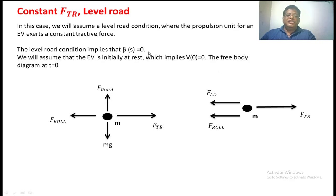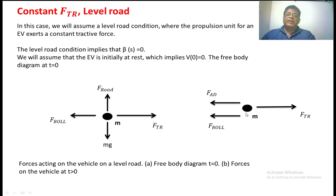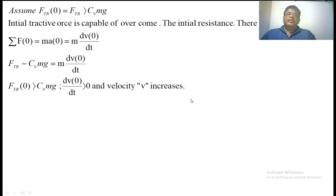The level road implies that the gradient is 0. Initially, we assume the EV is at rest, which means the velocity of the vehicle is 0. This is the free body diagram at t=0 showing the forces acting on the vehicle travelling on the plane road. We assume the initial tractive force is such that F_tr must be greater than C0·m·g. So the sigma F at t=0 equals M·(dV/dt). We know that F_tr(0) is greater than C0·m·g, so this must be greater than 0, meaning the velocity will increase.